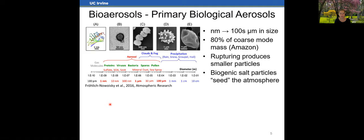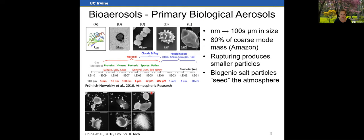These primary biological aerosols, or bio-aerosols, can comprise a wide range of sizes — from very small nanometer sizes, such as a virus at about 50 nanometers, all the way up to much larger sizes like a pollen grain. They can also contribute to a substantial portion of atmospheric particle mass — up to 80% of the coarse mode mass in the Amazon was attributed to bio-aerosols. Importantly, they can also rupture to produce smaller particles, which can stay in the atmosphere longer, reach higher altitudes, and thus have different effects on cloud microphysical properties.